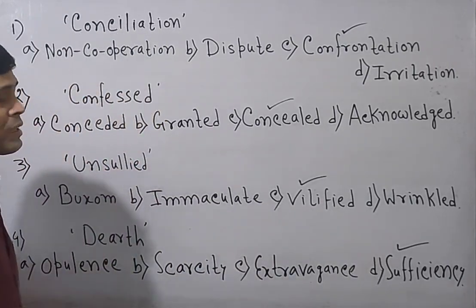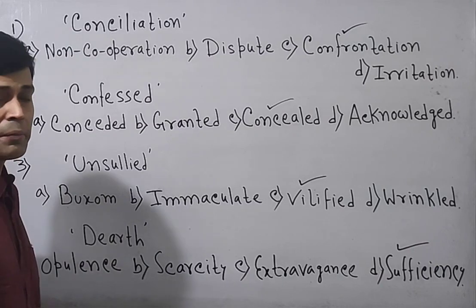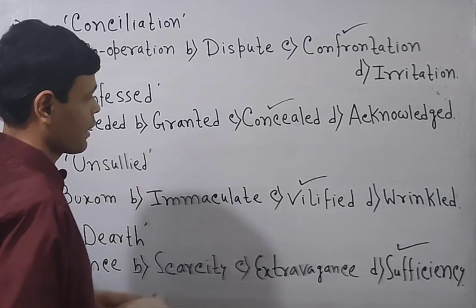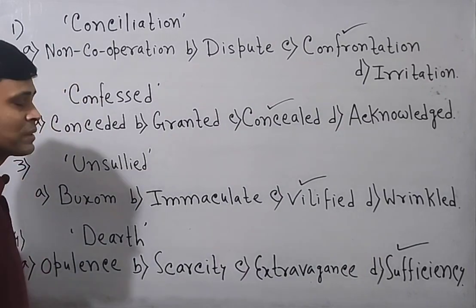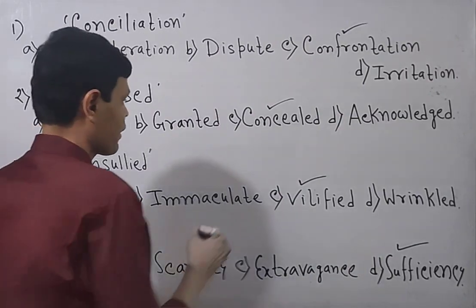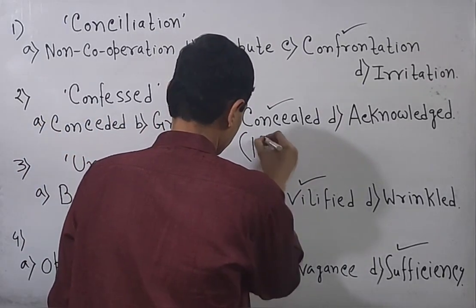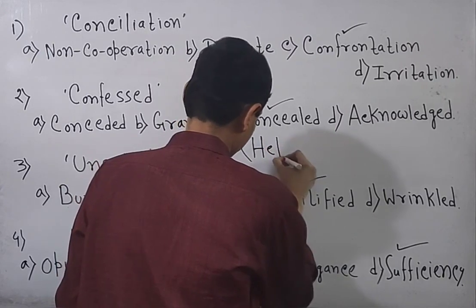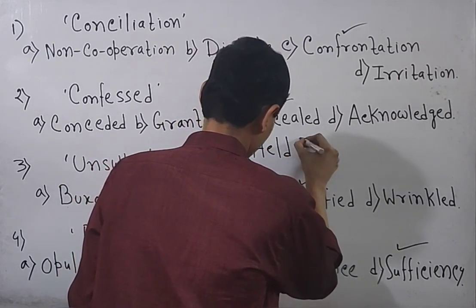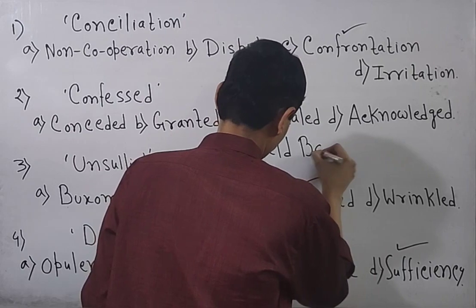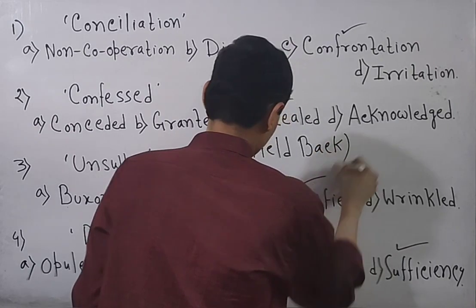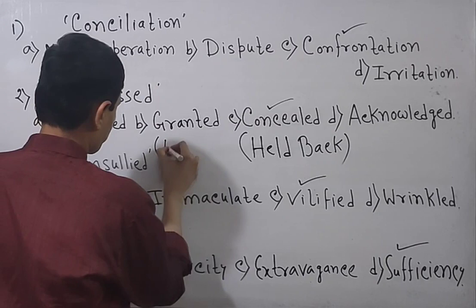Confessed means accepted here or you can say admitted. Therefore, the closest antonym here is concealed means held back. If I write the group verb, it means held back. Granted means you can say approved.